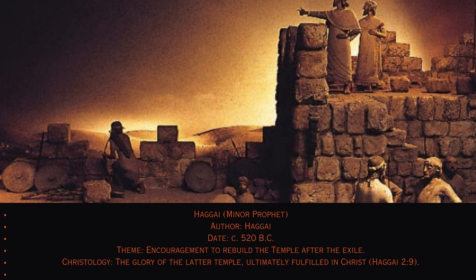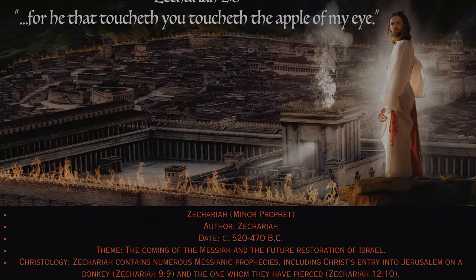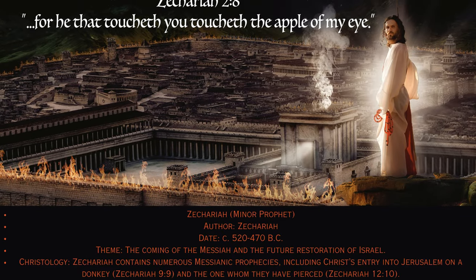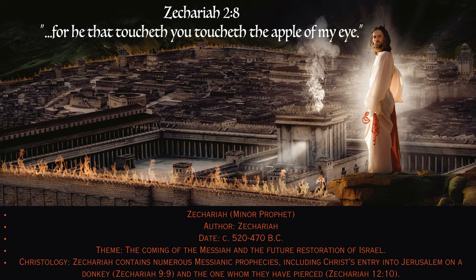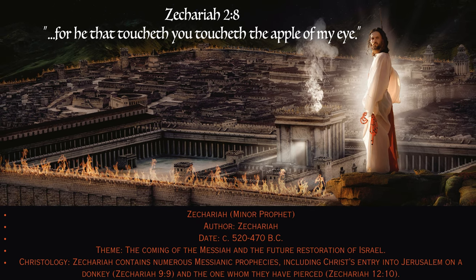38. Zechariah. Minor prophet. Author: Zechariah, circa 520–470 B.C. Theme: The coming of the Messiah and the future restoration of Israel. Christology: Zechariah contains numerous Messianic prophecies, including Christ's entry into Jerusalem on a donkey (Zechariah 9:9) and 'the one whom they have pierced' (Zechariah 12:10).